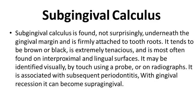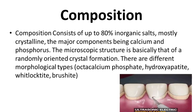Subgingival calculus is found underneath the gingival margin and is firmly attached to the tooth roots. It tends to be brown or black and is extremely tenacious, most often found on the interproximal and lingual surfaces. It may be identified visually, by touch using a probe, or on radiographs. It is associated with subsequent periodontitis, gingival recession, and can become supragingival calculus.